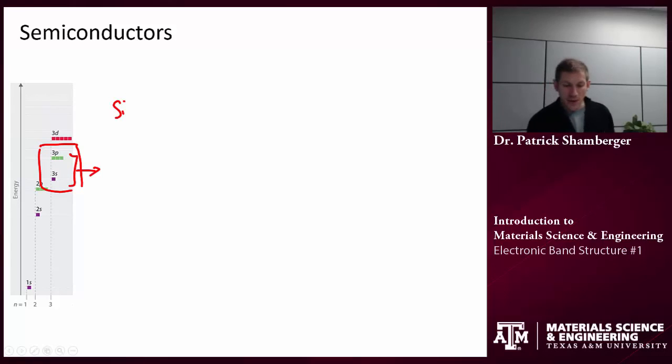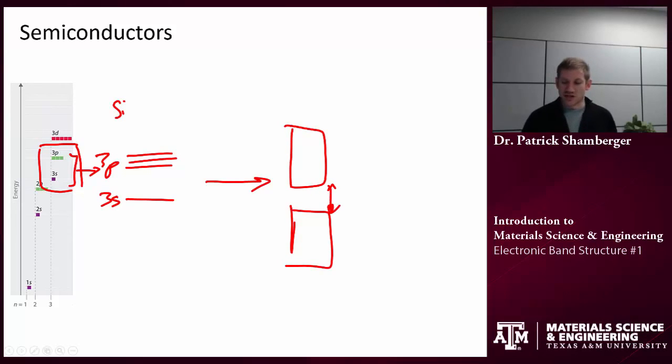So when I start combining silicon atoms together, an individual atom will have 3p levels and 3s levels. Remember there will be three orbitals in the p case, one orbital in the s case. When I combine together many, many atoms, these are going to all mix together. But the result actually gives me two continuous bands with a small separation in between.